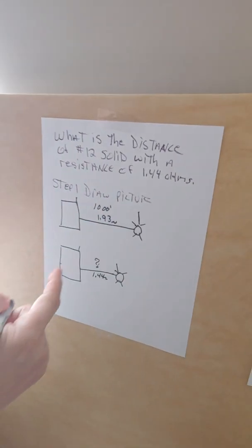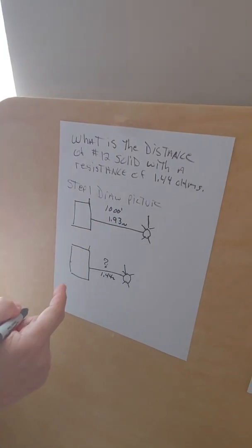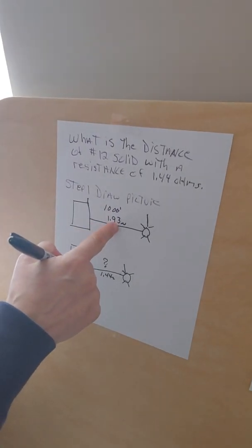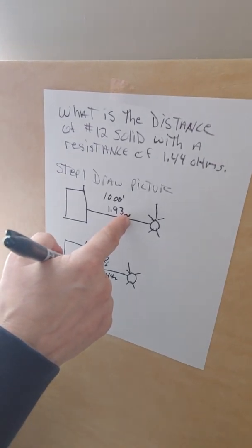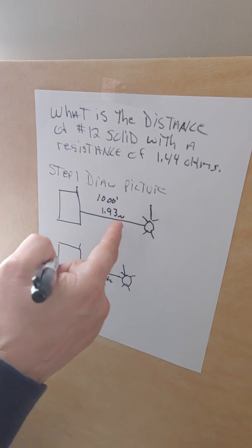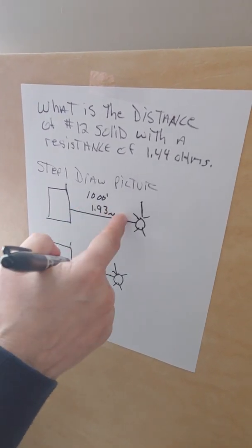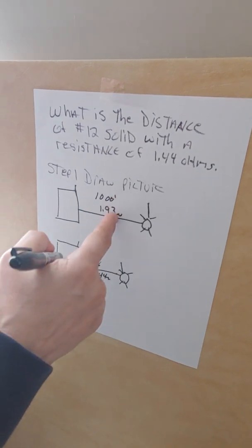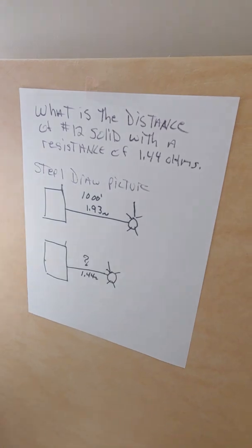Let me give you an example so everybody understands. If this is a thousand feet, what would 500 feet be? Well, it would be half of 1.93. If it was two ohms, it would be 1.00. So this would be half of the 1.93, and you could do that on a calculator.